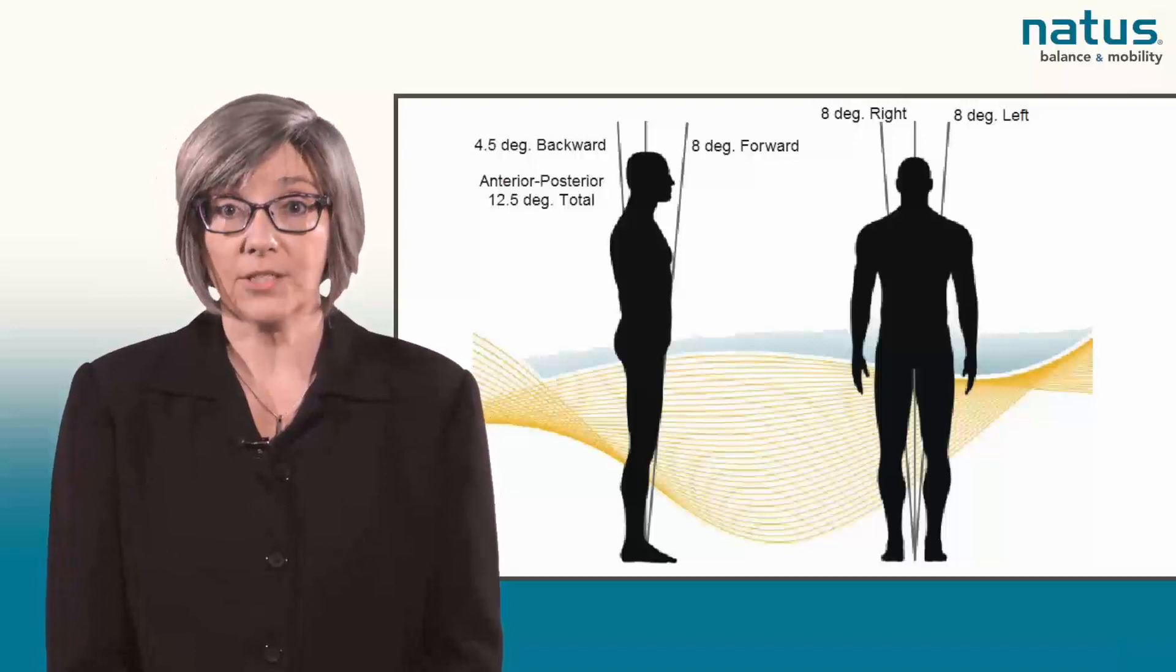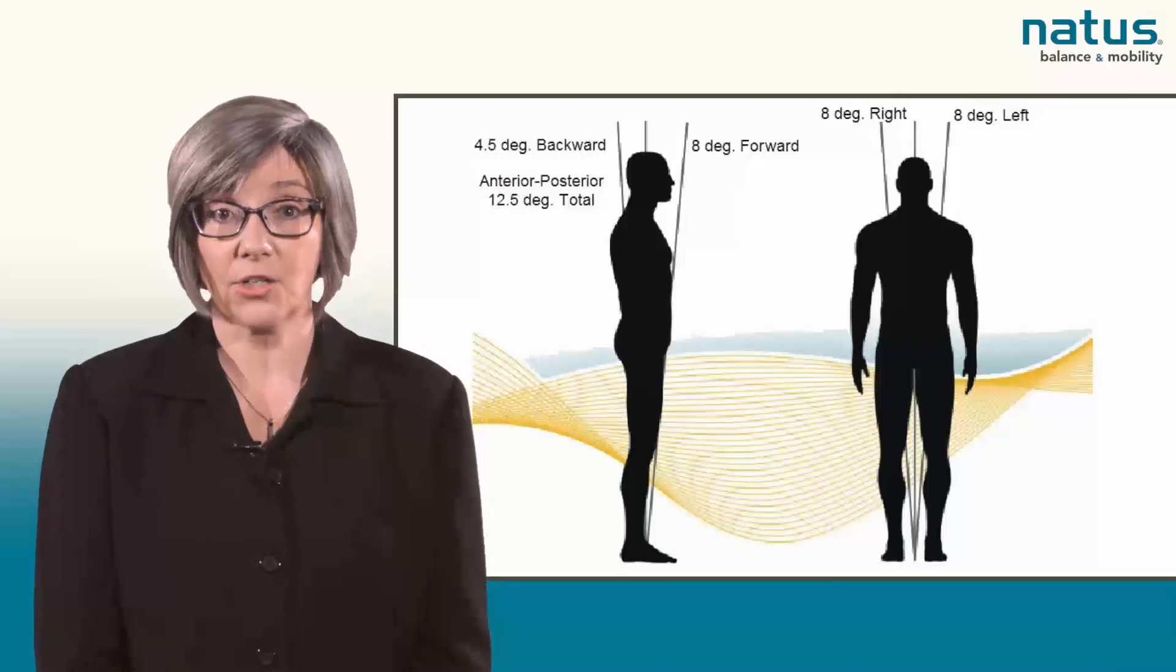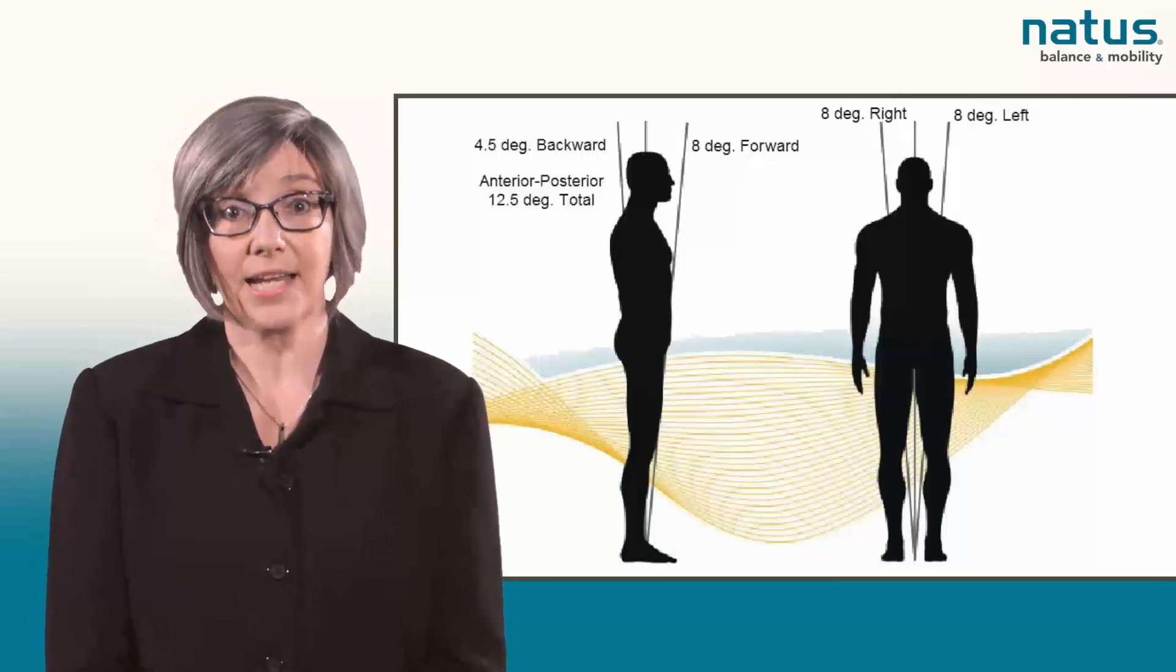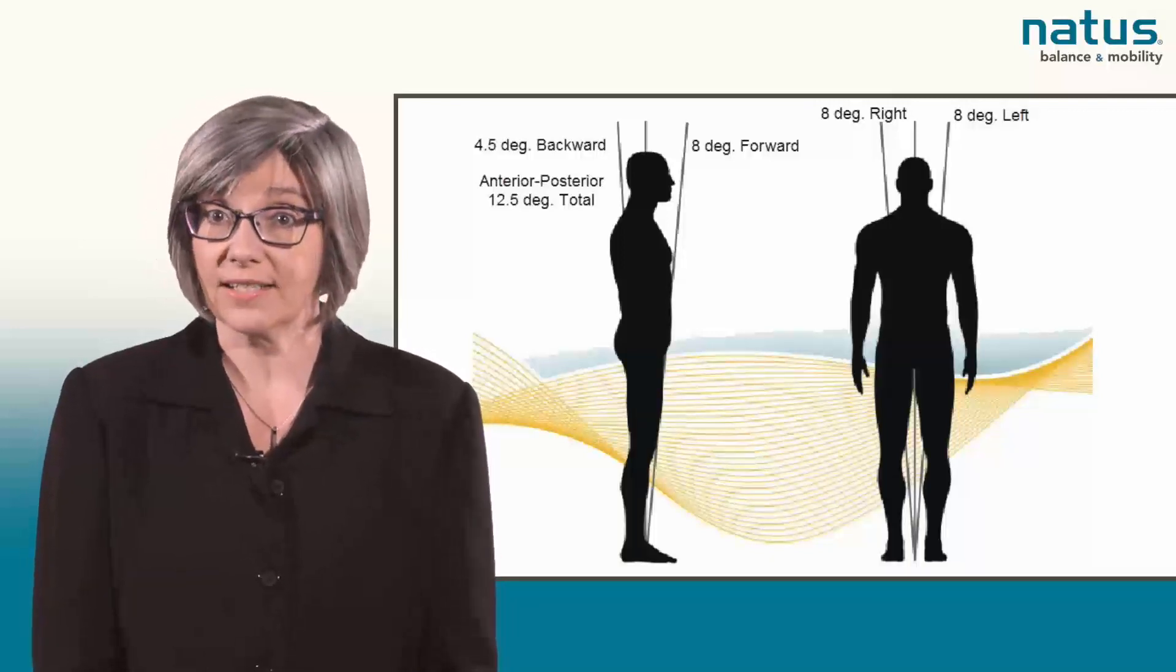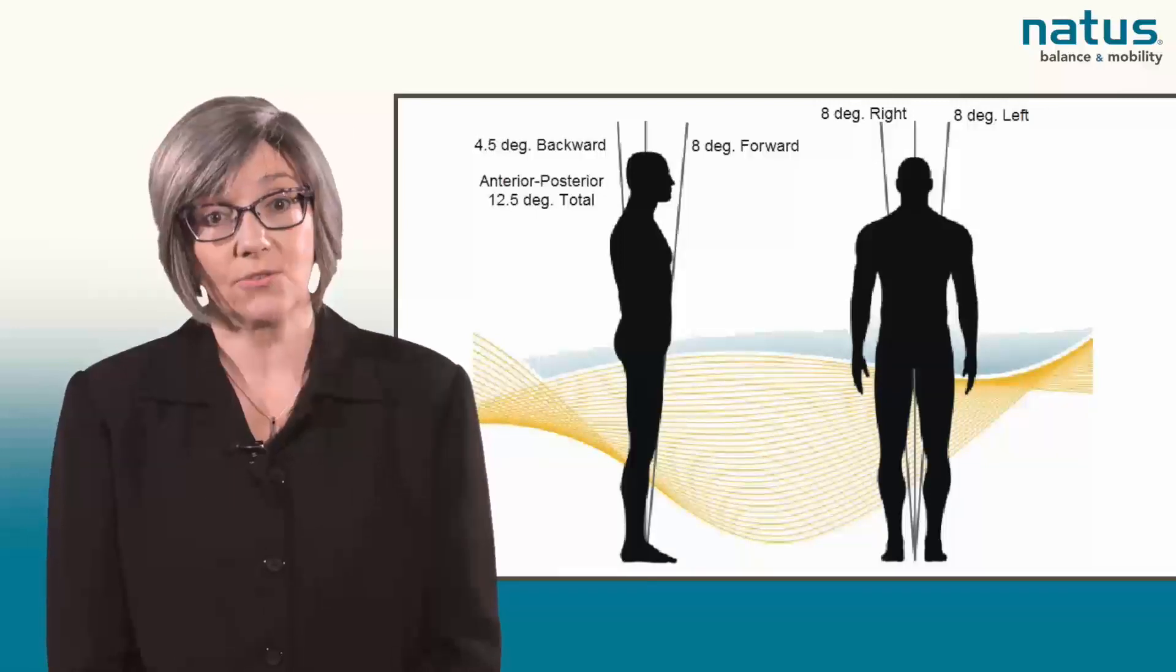A normal sway envelope is 12.5 degrees in the anterior-posterior direction: 8 degrees forward, 4.5 degrees backward. It also includes 8 degrees to the left and 8 degrees to the right.